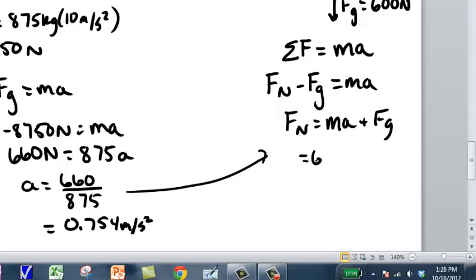So we get our 60 kilograms times 0.754 plus our 600 newtons, and that gives us a total of 645 newtons.